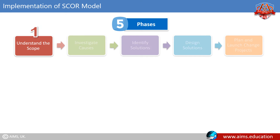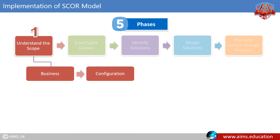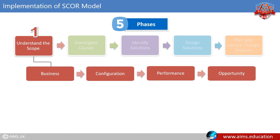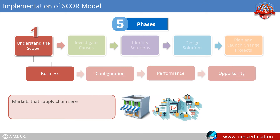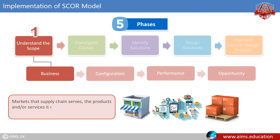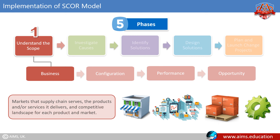Phase one is understanding the scope. The scope of a SCOR project is defined by four components: business, configuration, performance, and opportunity. The business component involves understanding the markets that the supply chain serves, the products and/or services it delivers, and the competitive landscape for each product and market.